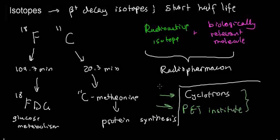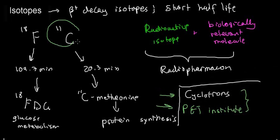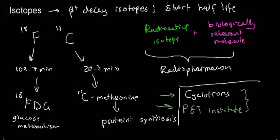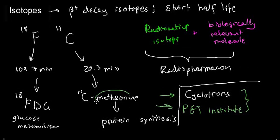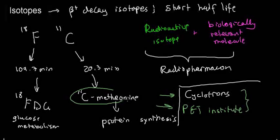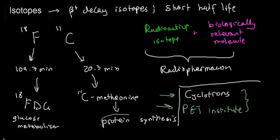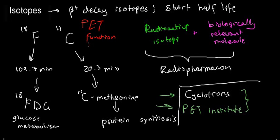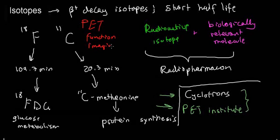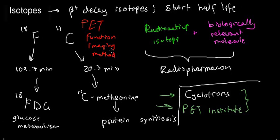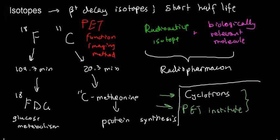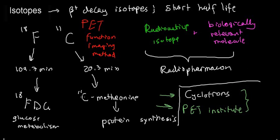These beta positive decaying isotopes can be paired with their respective biologically relevant molecule to form a radiopharmacon that checks specific interactions in our body. Thus, PET is going to give us a functional image. It's going to be a functional imaging method. In the next video, we'll discuss the difference between functional and anatomical.